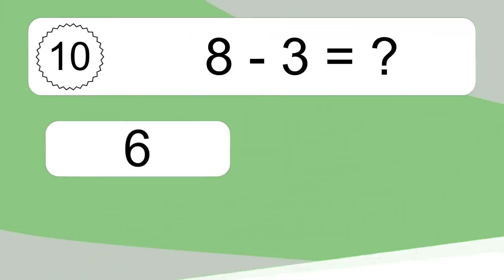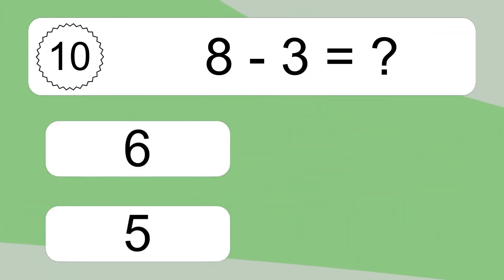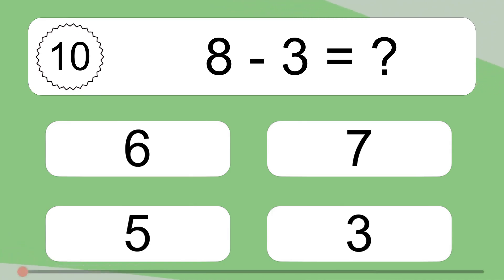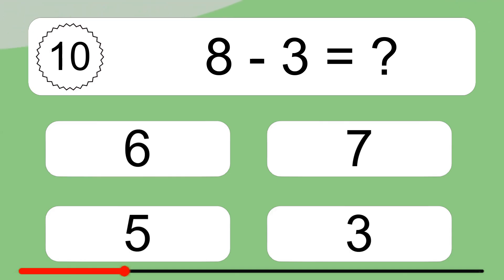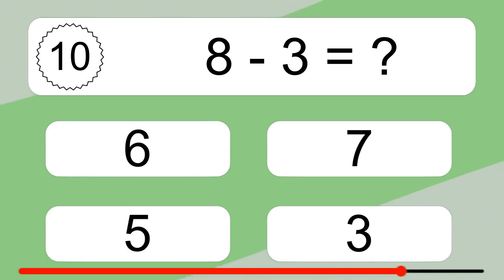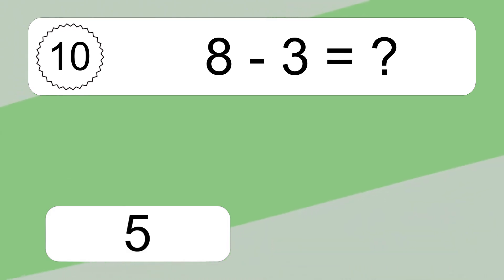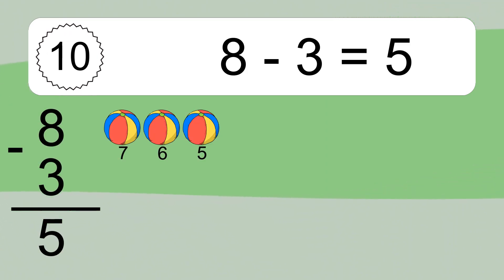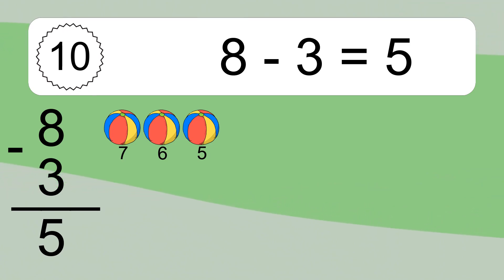8 minus 3 equals what? 8 minus 3 equals 5. Let's count it: 7, 6, 5.